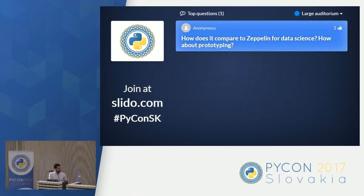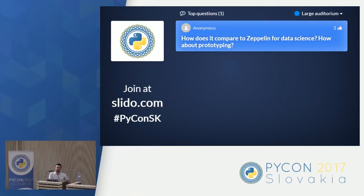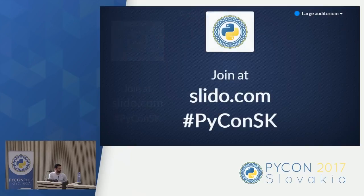How does Jupyter compare to Apache Zeppelin for data science and prototyping? I'm not really an expert in Apache Zeppelin. I think they target different kinds of people — Zeppelin is a Java project. One cool thing is you can use different languages at the same time, writing Java and Python inside the same notebook, which you cannot do in Jupyter since you need a separate notebook per kernel. But I prefer the front end of JupyterLab over Apache Zeppelin's front end.